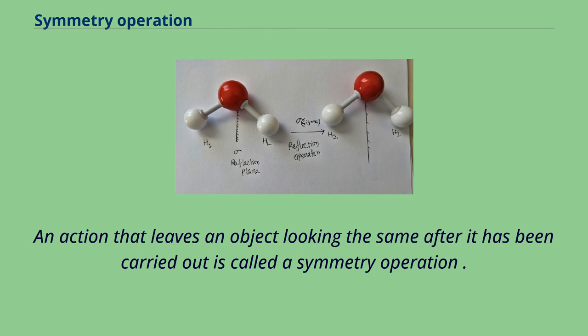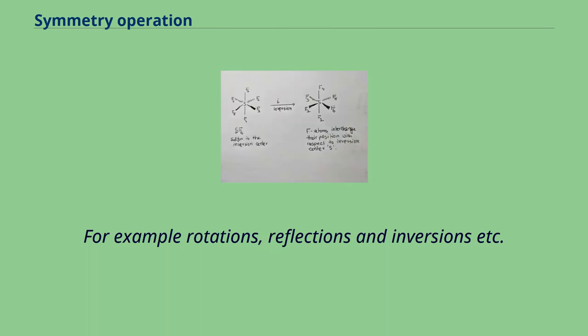An action that leaves an object looking the same after it has been carried out is called a symmetry operation. For example, rotations, reflections and inversions.